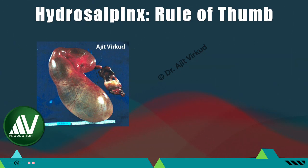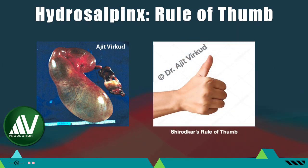Before this grading came into use, in our residency days, we used to talk about Shirodkar's rule of thumb. According to V. N. Shirodkar from Mumbai, India, if the hydrosalpinx is bigger than a human thumb, there is irreparable destruction of the endosalpingeal cilia, and salpingostomy or salpingoneostomy to open the tubes will be merely a surgical exercise with no functional success.